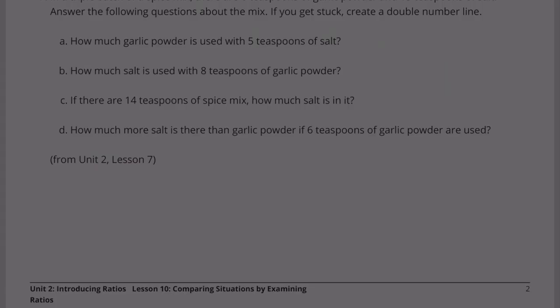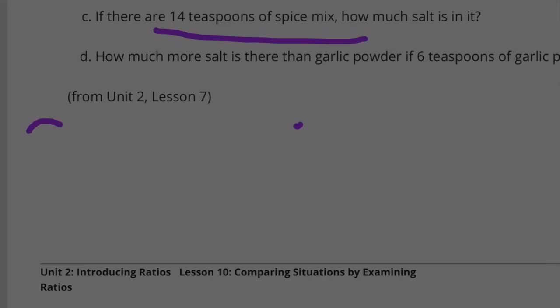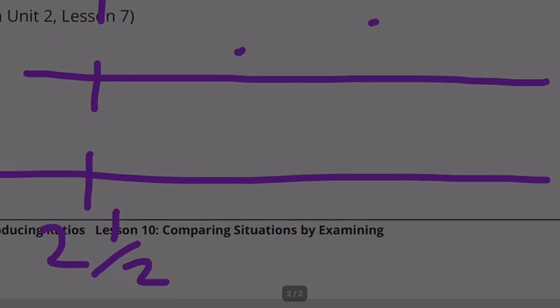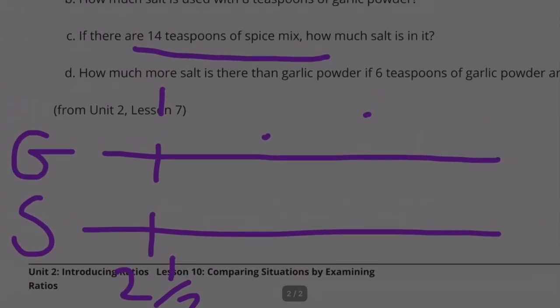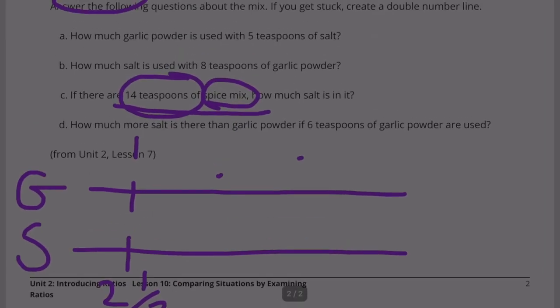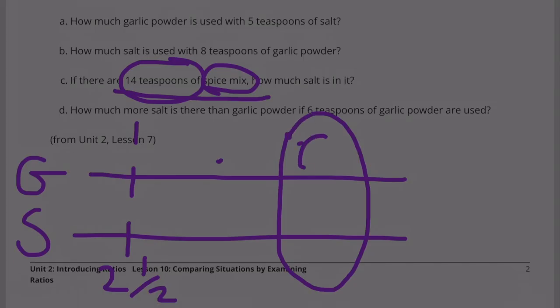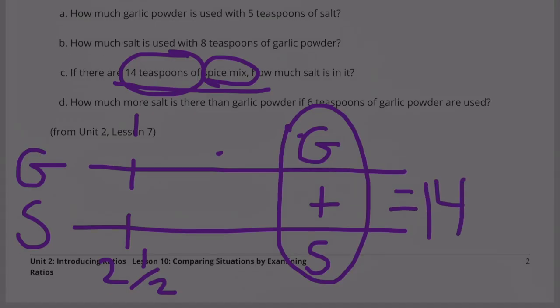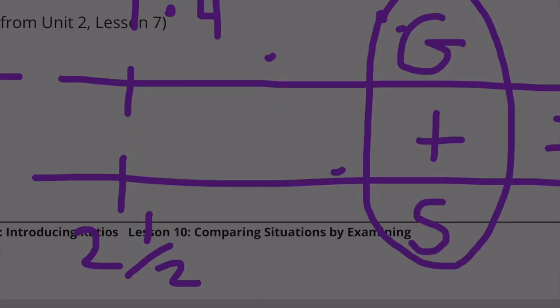C. If there are 14 teaspoons of spice mix, how much salt is in it? So you've got garlic and you've got salt. So we're looking for a total of 14 teaspoons of spice mix. So that's going to be the sum of the garlic and the salt together. So this amount of garlic plus this amount of spice mix needs to equal 14 teaspoons.